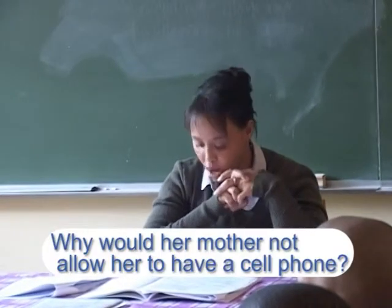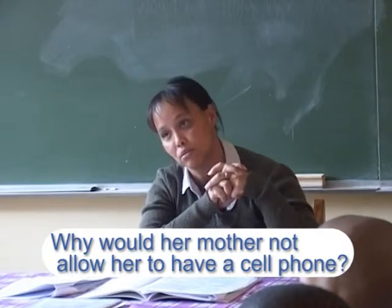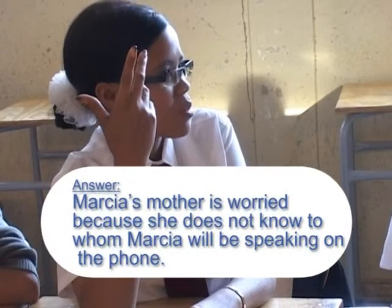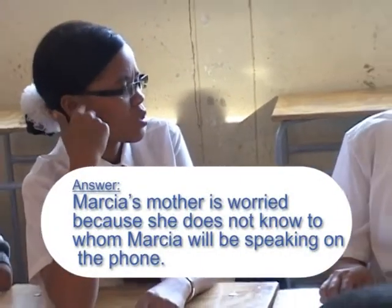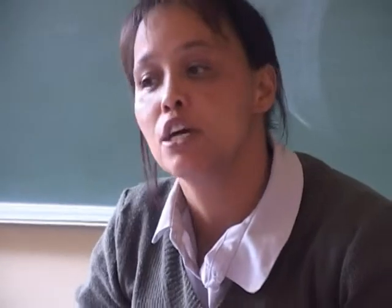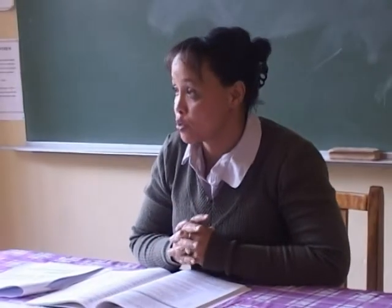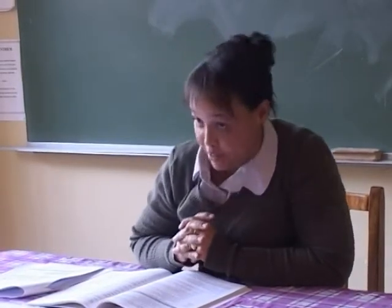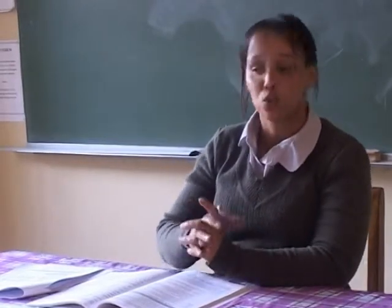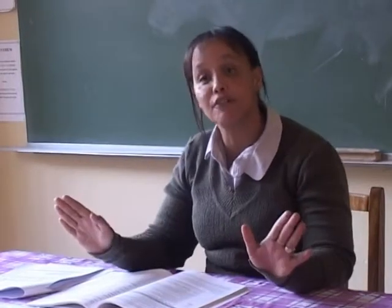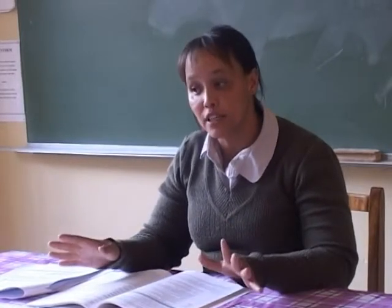Why doesn't Marsha's mum want her to have a cell phone? A student answers: because she does not know who Marsha was speaking to. That's right. When we do a reading comprehension, we are required to look for specific information to answer the questions asked. These questions all relate to the text. The answers should relate directly to the text — no additional information should be added, and no relevant information should be left out.